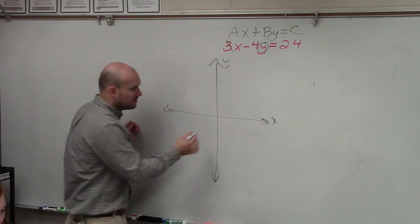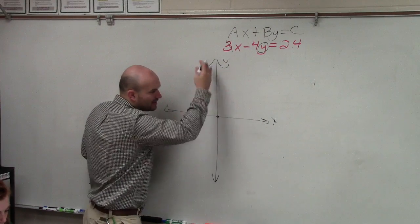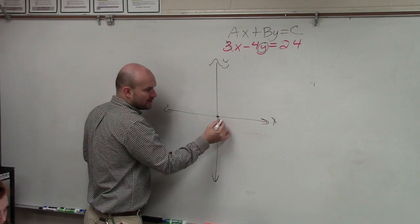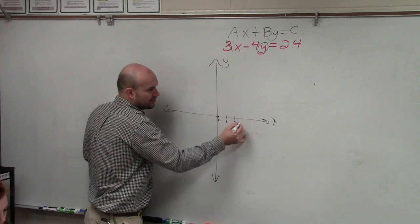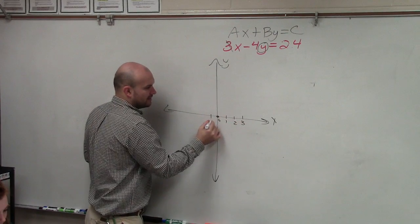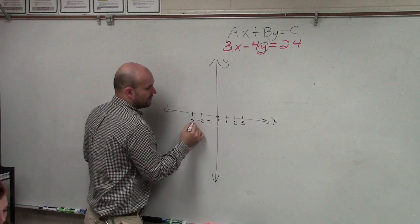The x and y axes are number lines. Just forget about the y-axis for a second. That's 0, 1, 2, 3, negative 1, negative 2, negative 3. It's just a number line.